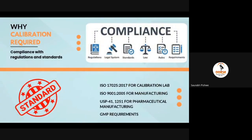The second reason is compliance with different industry standards. There are several compliance standards depending on the industry. This webinar covers healthcare, pharmaceutical, and metrological industries. ISO 17025:2017 is for calibration, metrological testing, and calibration labs — bodies that certify and give statements of conformity on weighing balances. ISO 9001:2015 is a quality management standard for all manufacturing units complying to QMS requirements. Then there are USP chapters 41 and 1251 in pharmaceutical industries, and other GMP requirements in pharmaceutical or healthcare industries.